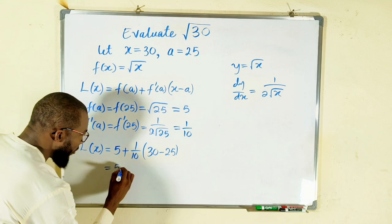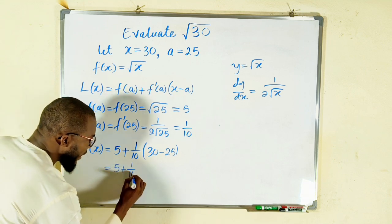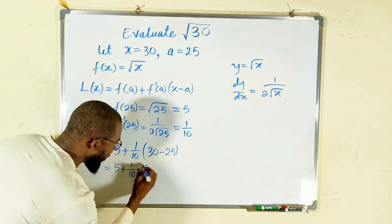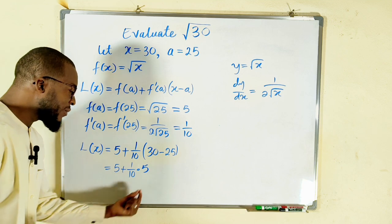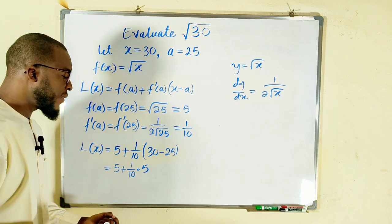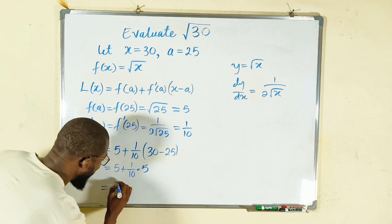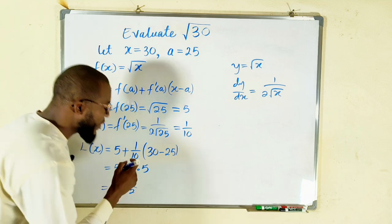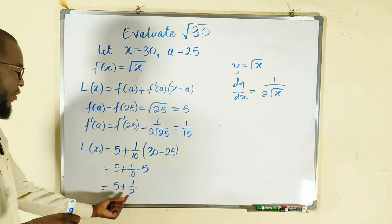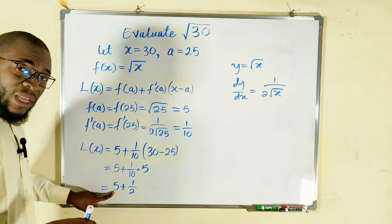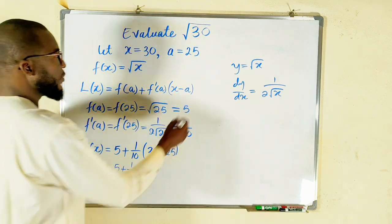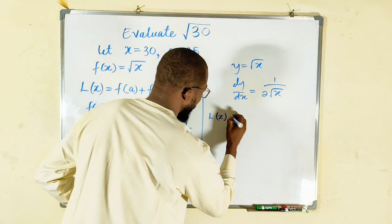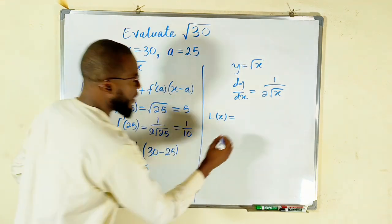This is equal to 5 plus 1 divided by 10 multiplied by 30 minus 25 is 5. And if you multiply 1 over 10 by 5, you shall obtain 1 divided by 2. So this is equal to 5 plus 1 divided by 2 because 5 can divide 10 exactly 2 times. So this is 2 times 5 is 10 and 10 plus 1 is 11. So finally, our L(x) is equal to 11 divided by 2.